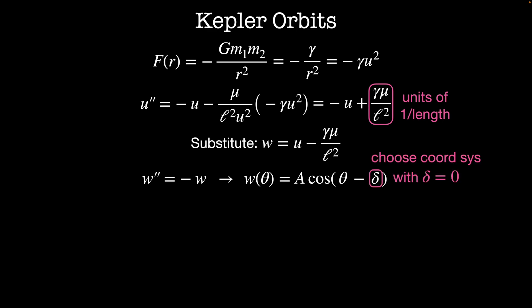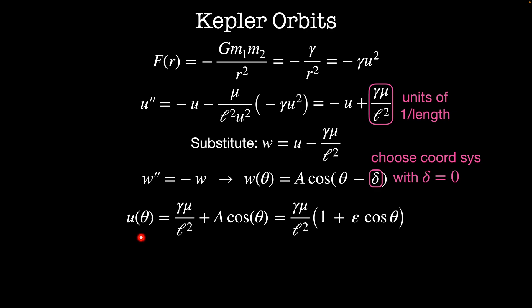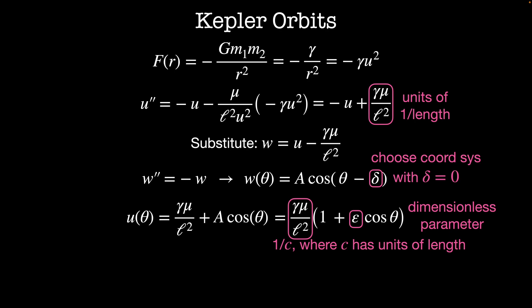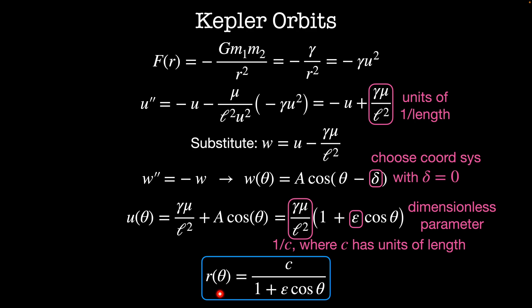Most of the time we can choose a coordinate system so that delta equals zero. Then u(theta) equals gamma mu over L squared plus our constant A times cosine theta. Since A is a constant of integration, I can factor it out, and I end up with u(theta) equals gamma mu over L squared times (1 plus epsilon cosine theta), where epsilon is a dimensionless parameter called the eccentricity of the orbit. The eccentricity describes the shape of a particular orbit. Replacing the constant out front with 1/c, the orbit equation becomes r(theta) equals c divided by (1 plus epsilon cosine theta).